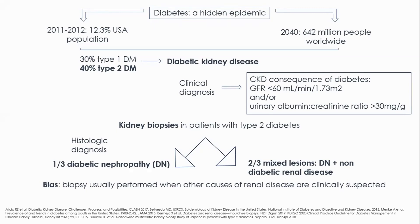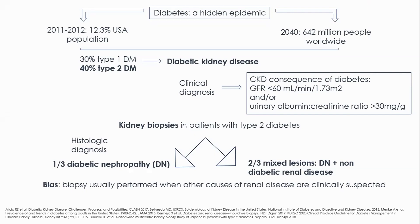Diabetes kidney disease is a clinical diagnosis based on the presence of chronic kidney disease as a consequence of diabetes, defined by GFR below 60 and/or urine albumin-creatinine ratio above 30. However, when series of kidney biopsies of patients with diabetes are analyzed, only one-third of patients presented diabetic nephropathy — that is, a histological diagnosis — and two-thirds presented non-diabetic kidney disease alone or together with diabetic nephropathy.